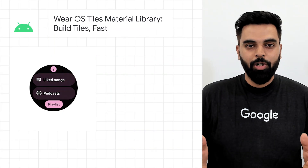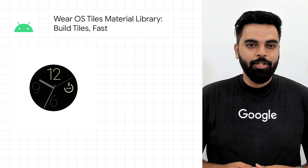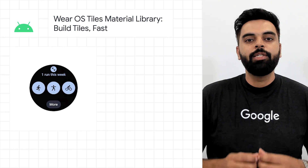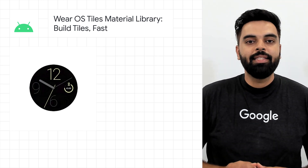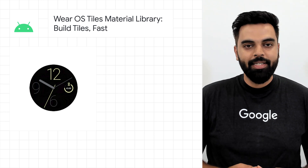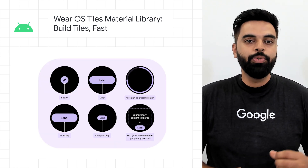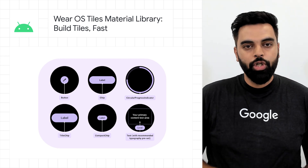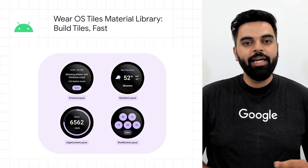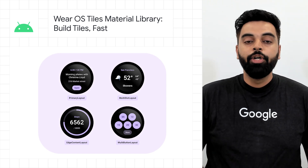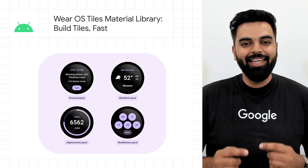We also launched the WearOS Tiles Material Library. Instead of building buttons and progress indicators from scratch, you can use these pre-built material components and layouts to create tiles that embrace the latest material design for WearOS. There are components for elements commonly used in tiles, such as button, chips, and circular progress indicator, and layouts like primary layout and edge content layout. You can learn more about the WearOS Tiles Material Library in the links shared below.